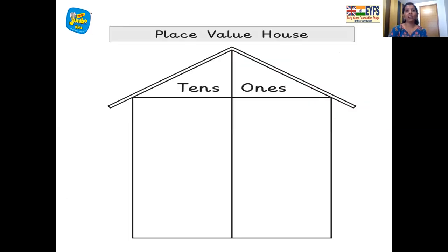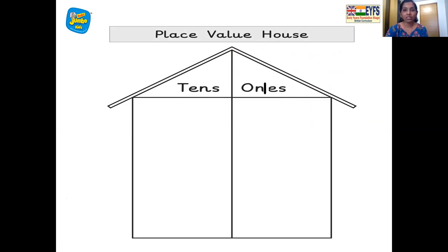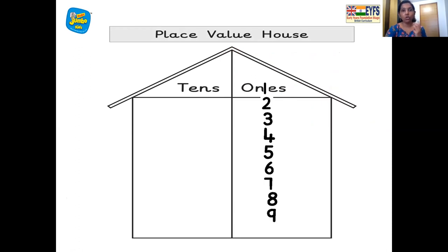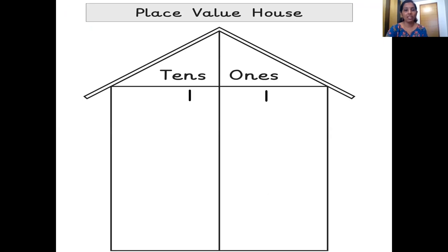And here comes our place value house — the house of numbers, where all the numbers live together. We have the ones room and the tens room, and the rule is one number, one room. So let's see how the numbers live here. One ones, two ones, three ones, four ones, five ones, six ones, seven ones, eight ones, nine ones. But number ten has two numbers in it — one and zero — so we will move one to the tens room. One tens, zero ones — ten. One tens, one ones — eleven. One tens, two ones — twelve.